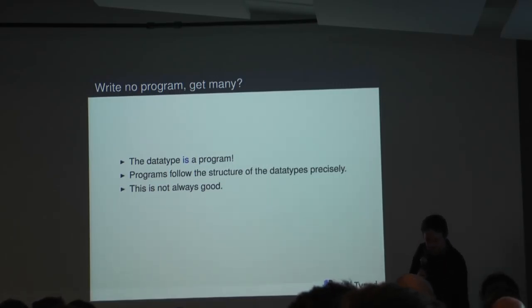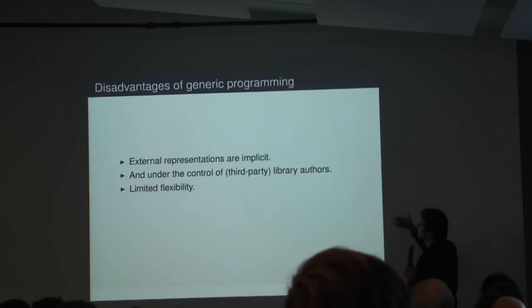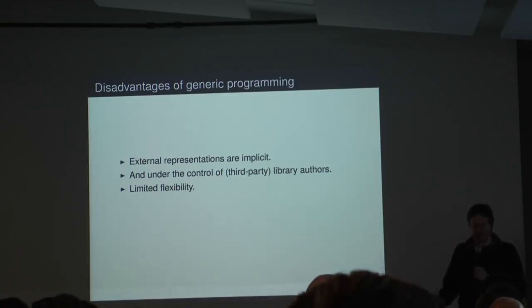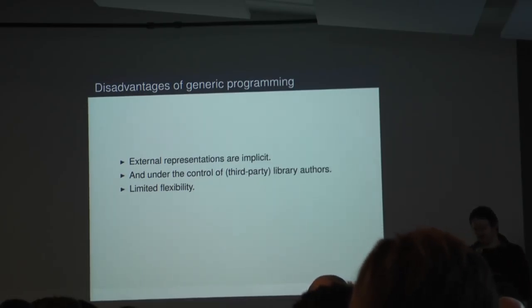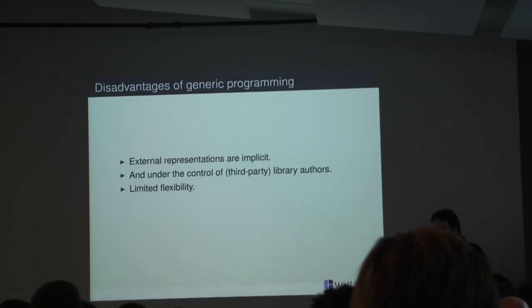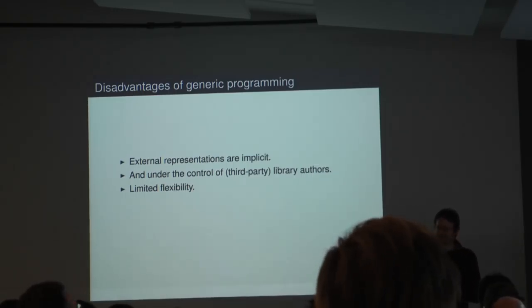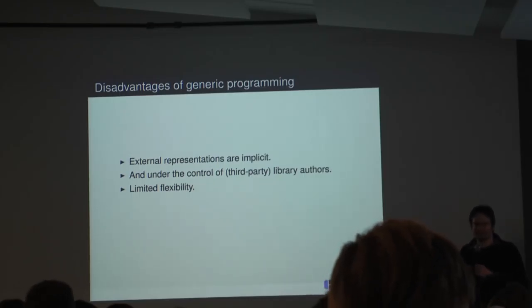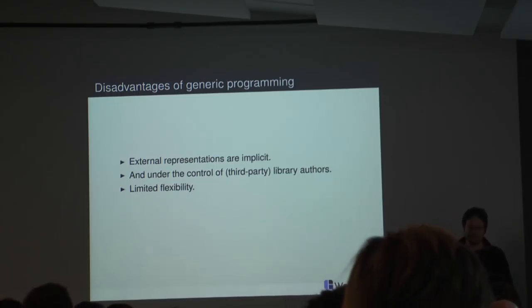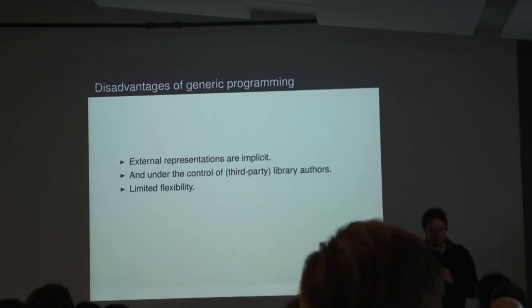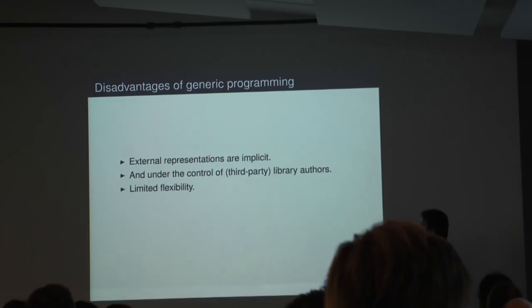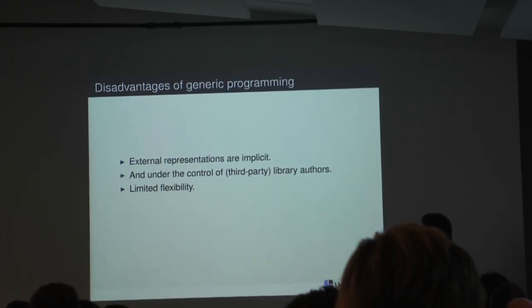In general, the disadvantages of using generic programming are that the external representations of your data are implicit and under the control of third-party library authors. If you're using the generic program to derive ToJSON and FromJSON instances, you're trusting the Aeson library author not to change the algorithm from one release to the next — which would completely break everything. And that may even happen accidentally.